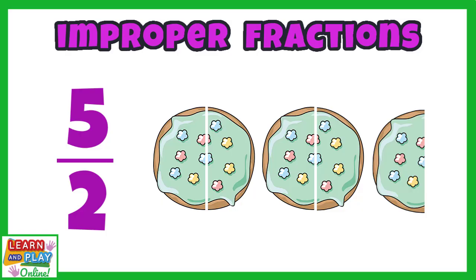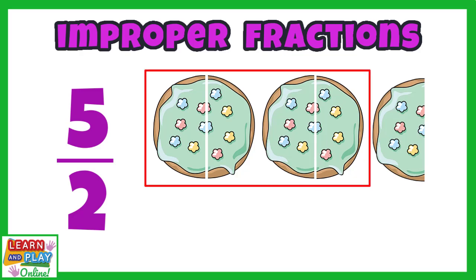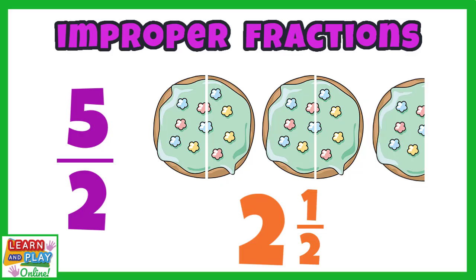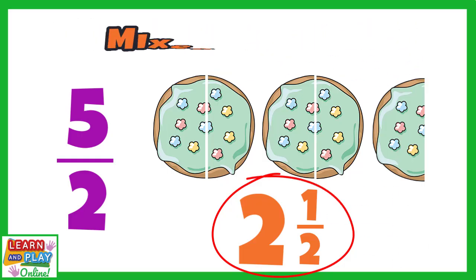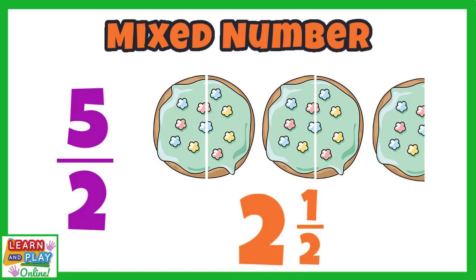How many doughnuts are there altogether? Well, here you can see that we have 2 whole doughnuts, and here is half of a doughnut. So altogether, we have 2 and a half doughnuts. This number that we just created is what we call a mixed number — a combination of a whole number and a fraction. From this example, you can see that 5 halves is the same as 2 and a half.